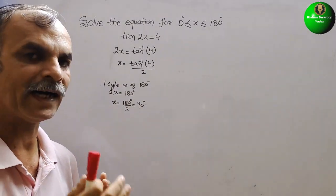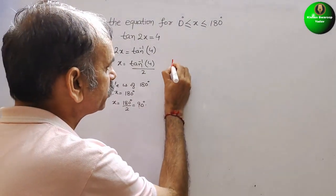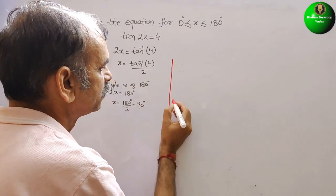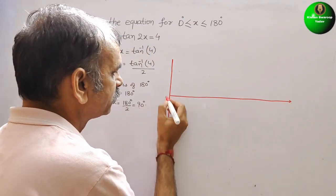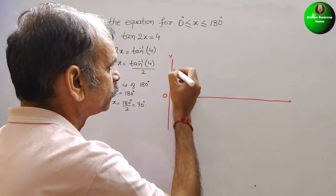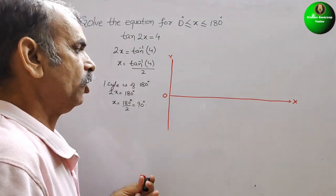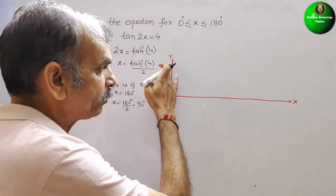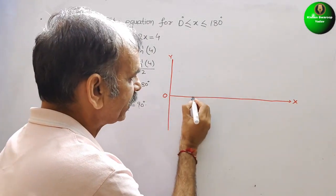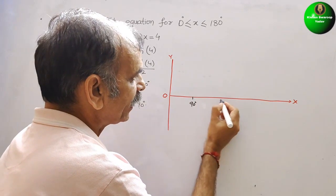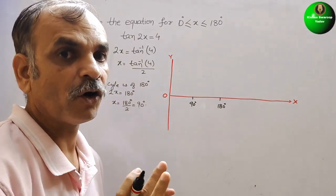First we have to draw a tan cycle on our graph. This is your y-axis and this is your x-axis. This is 0. We will put the amplitudes on the y-axis and the degrees on the x-axis. First is 90°, second is 180°. This is your one complete cycle for tan.